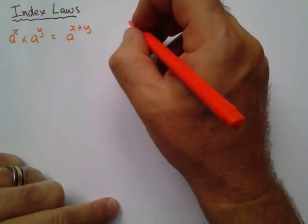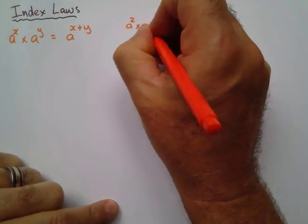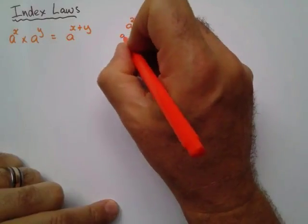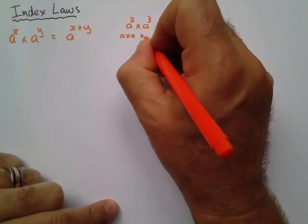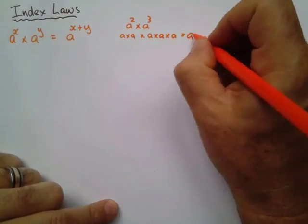And simply where that comes from, if I have a squared times a to the power 3, it actually means a times a, times a times a times a, which means that's the same as a to the power 5.